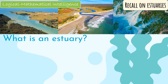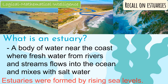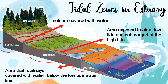Last week we talked about estuaries. Now let us try to recall what we have learned. An estuary is a body of water near the coast where fresh water from rivers and streams flows into the ocean and mixes with salt water. Sometimes we call it a bay, lagoon, or harbor. Take note that estuaries were formed by the rising level of sea water.